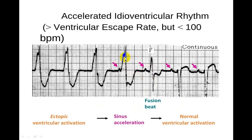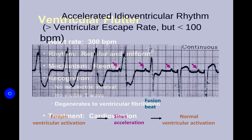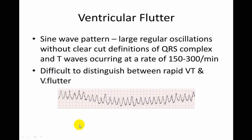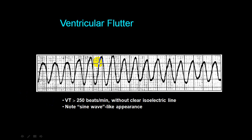Ventricular flutter: the rate is more than 250 to 300 — when it is more than 300 it favors ventricular flutter. The rate is typically placed between 250 to 350. These are described as having a sine wave type of appearance.